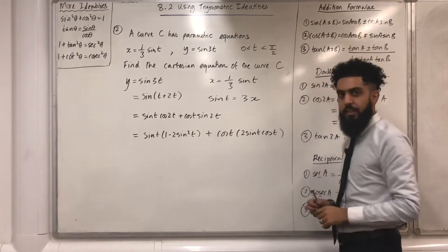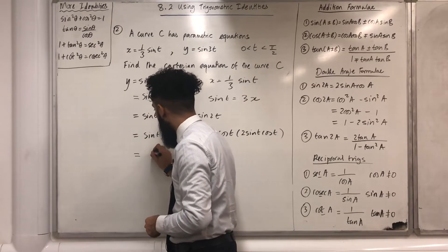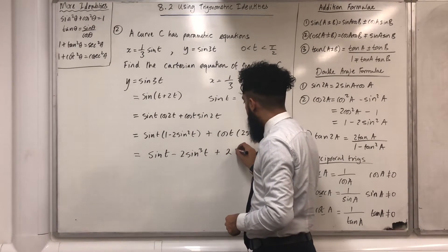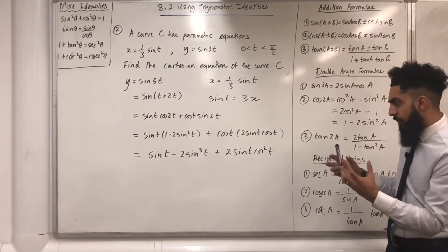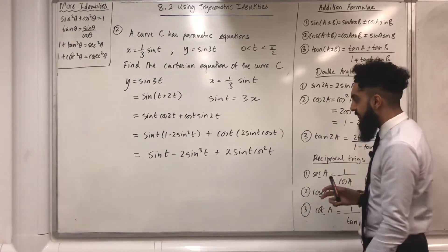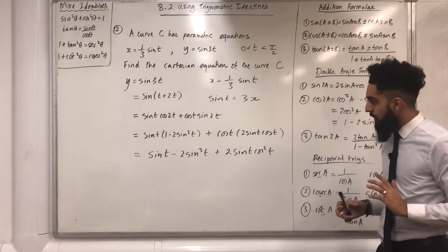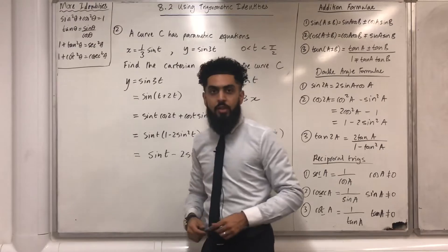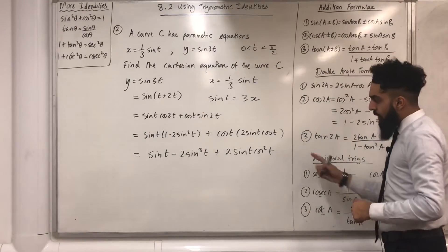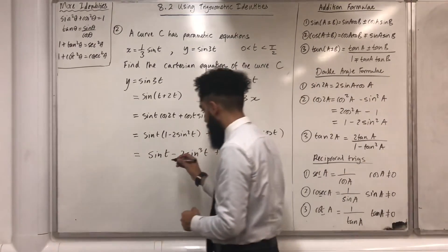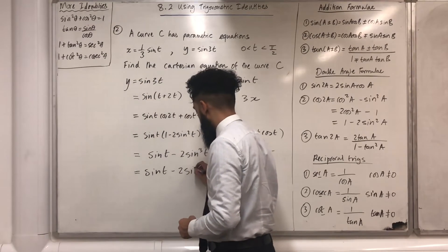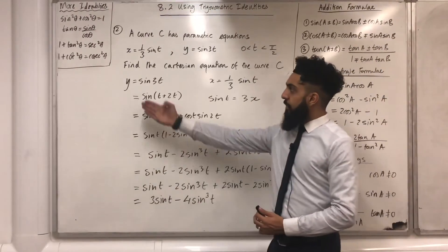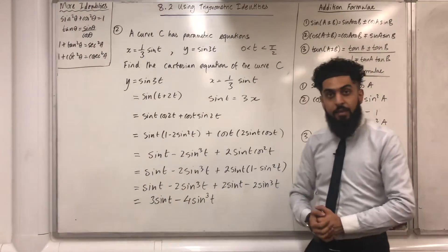If I expand and simplify, I obtain: sin(t) − 2sin³(t) + 2sin(t)cos²(t). There is an issue — I want sine only, and I still have cos²(t). I can replace cos²(t) with 1 minus sin²(t), using the identity sin²θ + cos²θ = 1. After expanding and simplifying y, I end up with y equals 3sin(t) minus 4sin³(t). I'm going to call this equation 1.